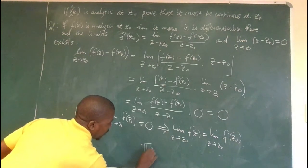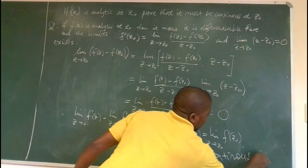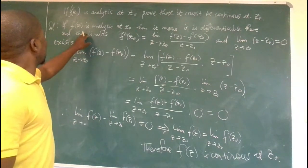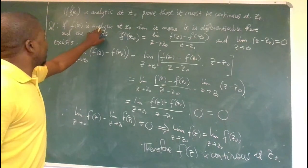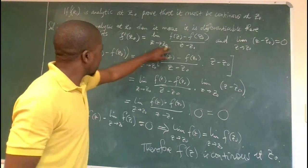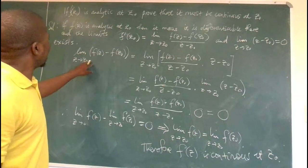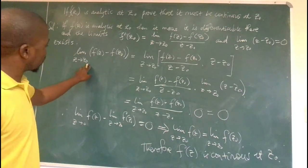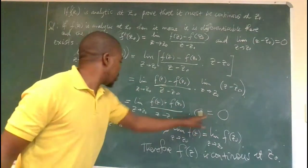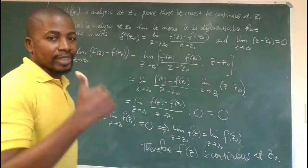Therefore, f of z is continuous, because of that last result. So, we are done. The idea was: from the function being analytic, it means it's differentiable. Being differentiable means this derivative limit exists, and also that the limit of z minus z0 equals 0 is satisfied. We looked at how f of z behaves as z gets closer to z0, applied a simple trick, split using the product property of limits, and eventually got that result equal to zero. Moving things around, this is the definition of continuity of a complex-valued function. Therefore, f of z is continuous at z0.